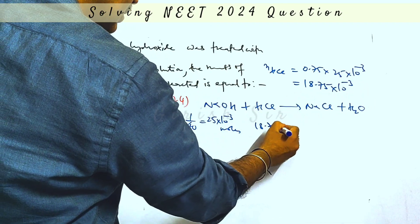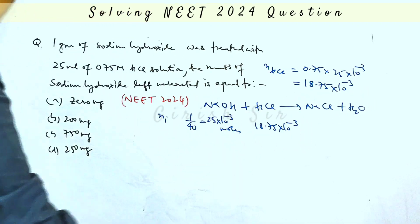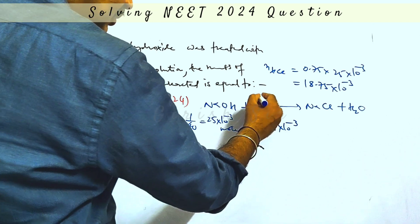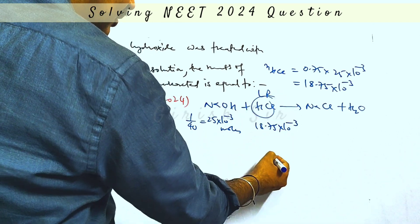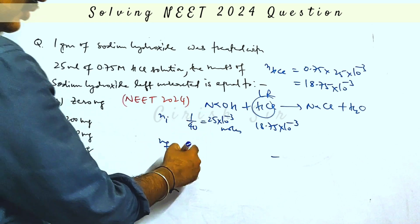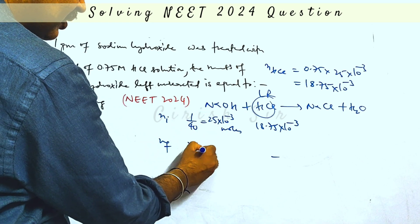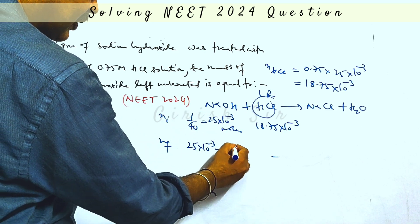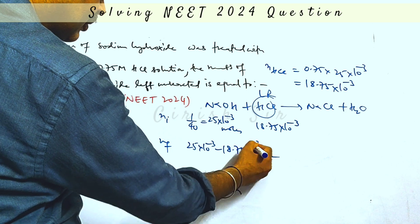These are the initial moles. Because HCl is present in lesser amounts, this will be the limiting reactant and finally gets consumed in the reaction. So when the reaction gets over, final moles of NaOH present should be calculated.